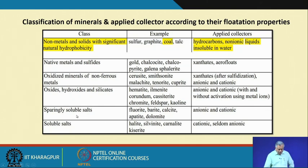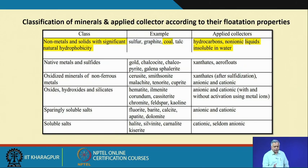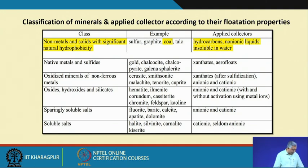For sparingly soluble salts — like fluorite, barite, calcite, apatite, and dolomite — both anionic and cationic collectors can be applied, but where to use anionic versus cationic and which type of collector to choose is a matter of expertise. For soluble salts — like halite, sylvite, and carnallite — cationic collectors are used, and seldom anionic collectors are applied for those purposes.